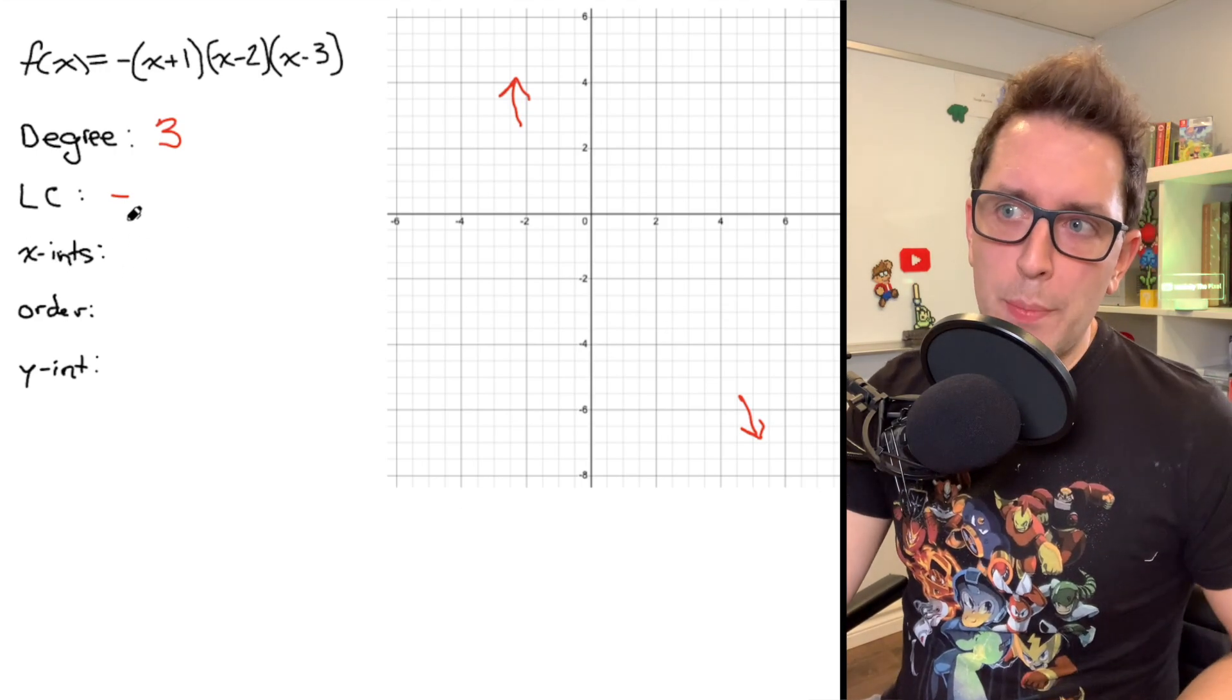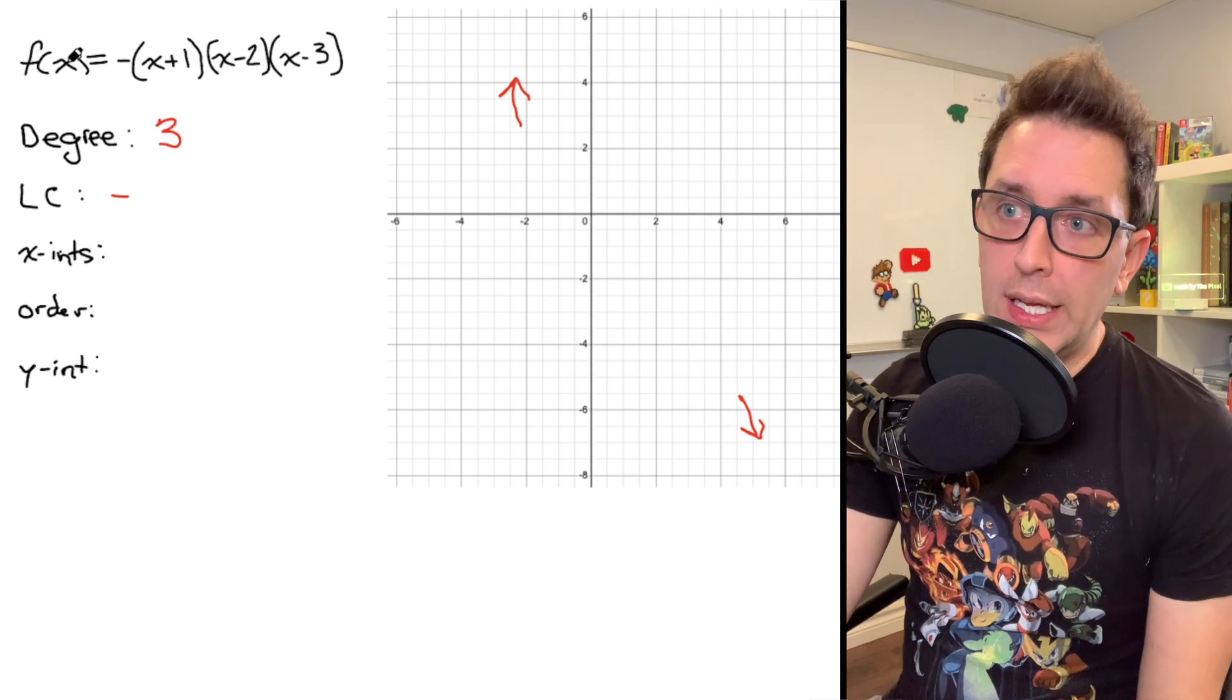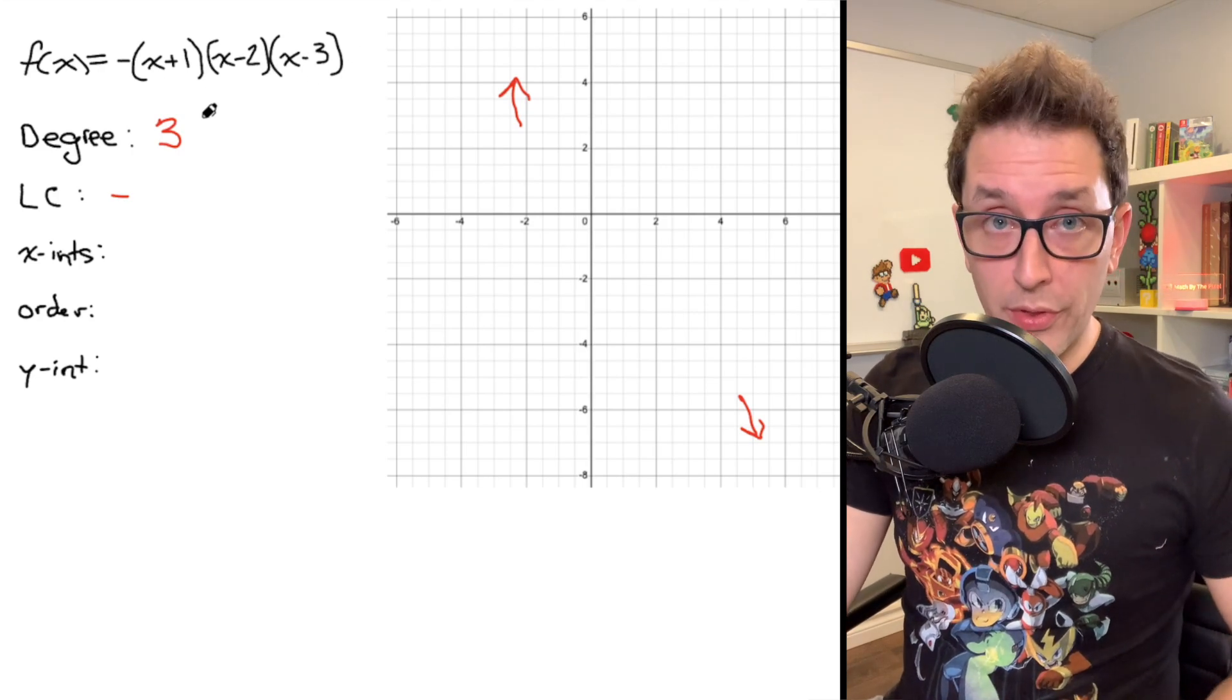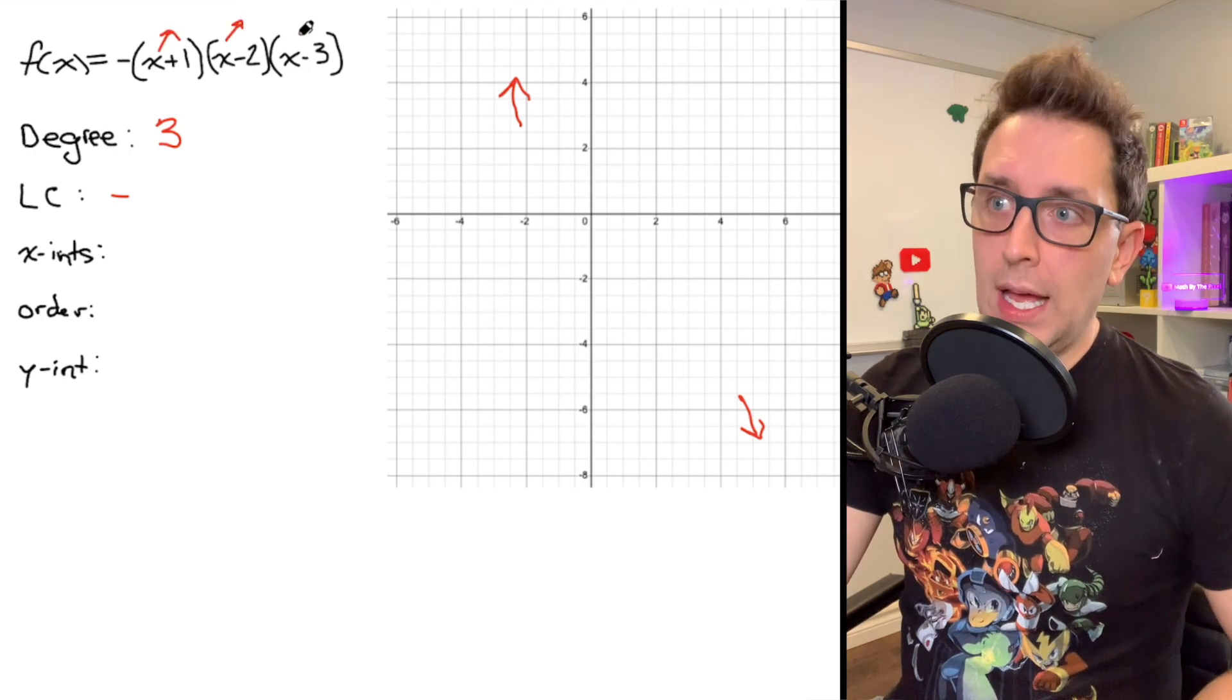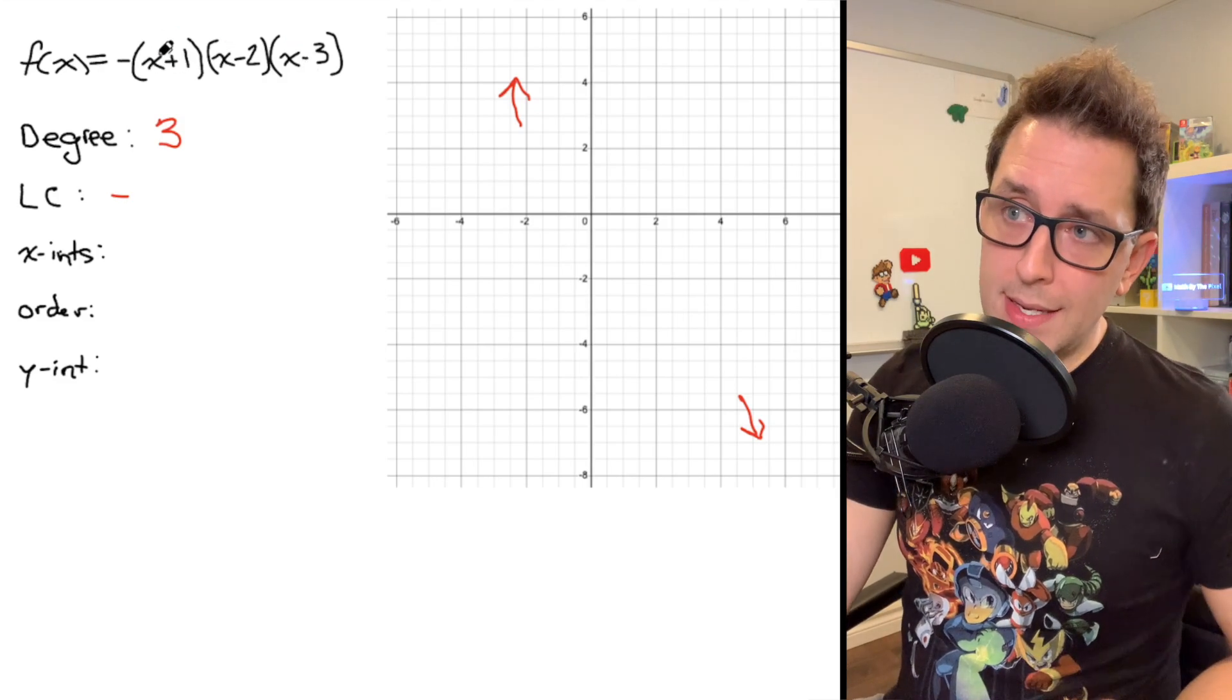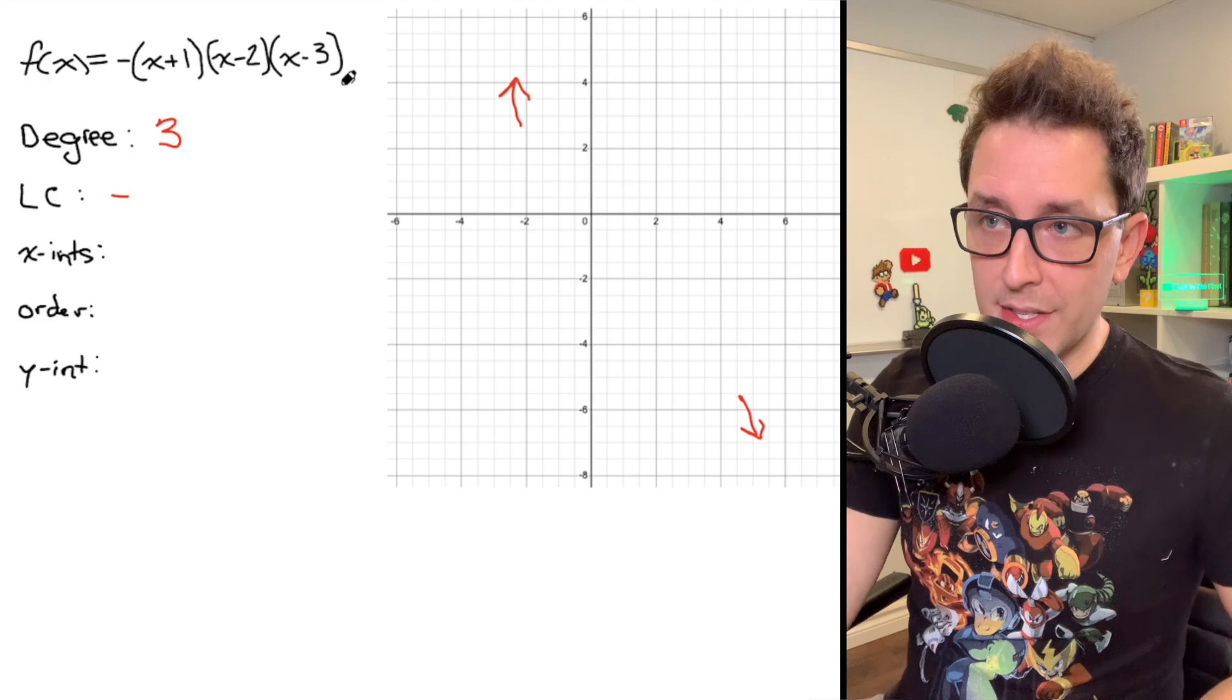Alright, so x-intercepts happen when the value of y is equal to 0. So I could set this entire function equal to 0 and just solve for the values of x that make that function equal to 0. The easiest way to do that, since we're working in factored form here, is to just look at each one of these sets of brackets and ask yourself what x value makes each of those equal to 0. As it turns out, the x value that makes each of these sets of brackets equal to 0 will just be the opposite sign of the second term.